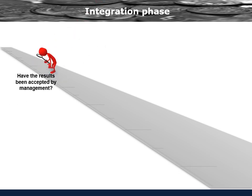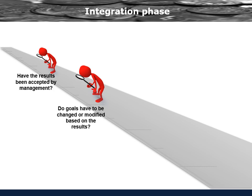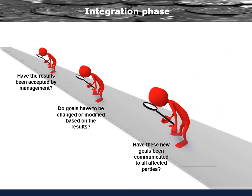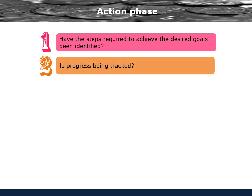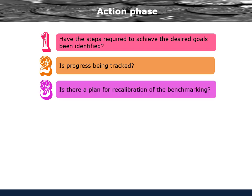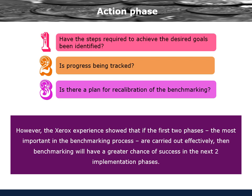Integration phase: Have the results been accepted by management? Do goals have to be changed or modified based on the results? Have these new goals been communicated to all affected parties? Action phase: Have the steps required to achieve the desired goals been identified? Is progress being tracked? Is there a plan for recalibration of the benchmarking? The Xerox experience showed that if the first two phases — the most important in the benchmarking process — are carried out effectively, benchmarking will have a greater chance of success in the next two implementation phases.